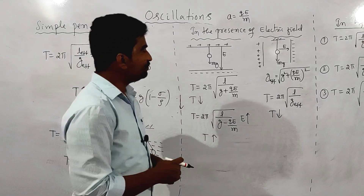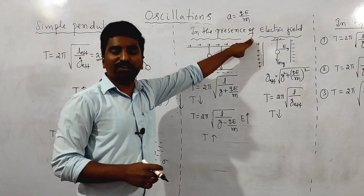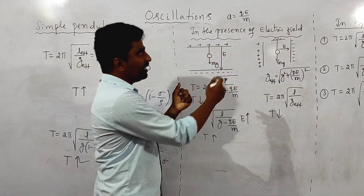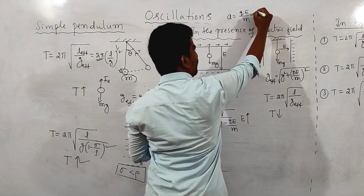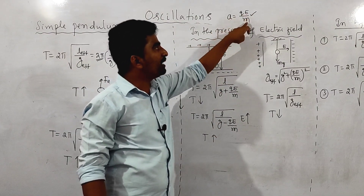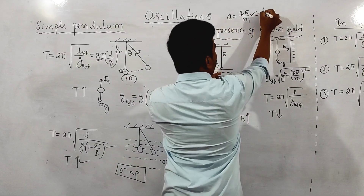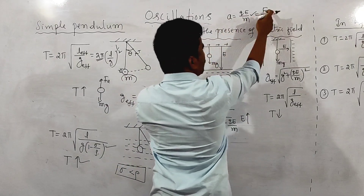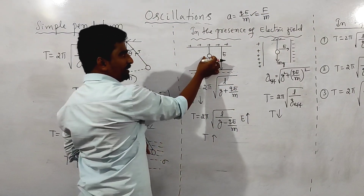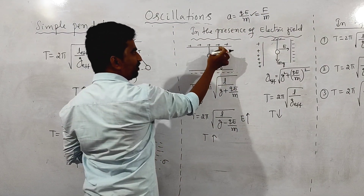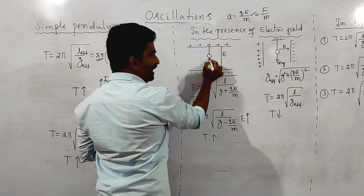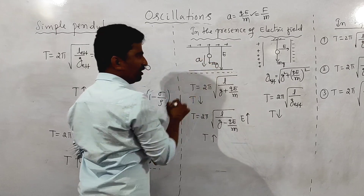Next, in the presence of an electric field: the acceleration due to the electric field is A = QE/M (force divided by mass, where force = QE in an electric field). If the electric field is directed downward, the acceleration is also downward.